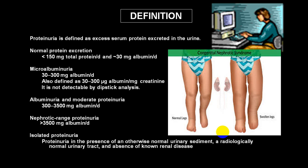If albumin is more than 300 it is easily detectable. Between 300 to 3500 milligram of albumin per day we call a moderate quantity. If it is more than 3500 we call it the nephrotic variety or nephrotic range of proteinuria.